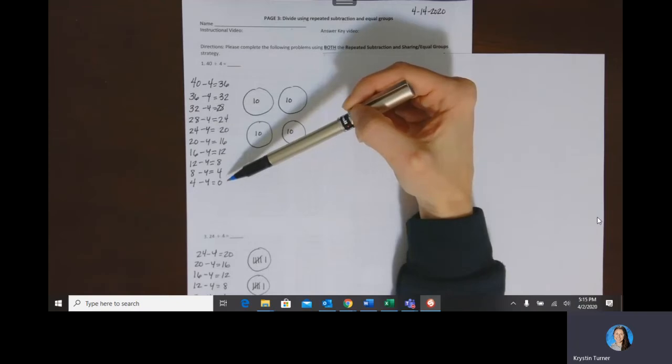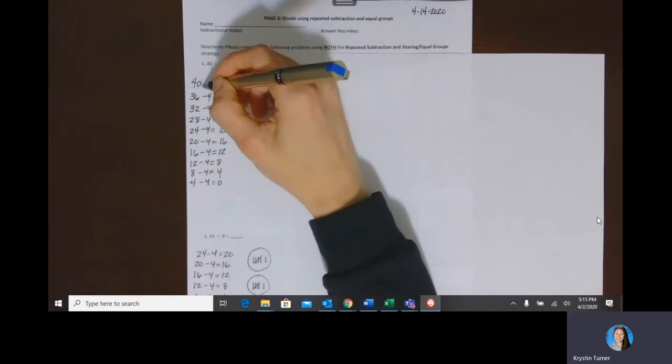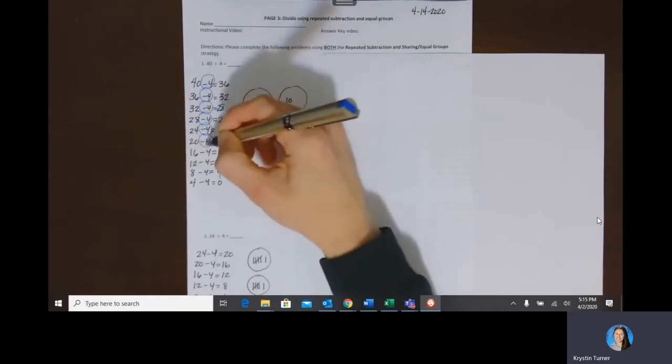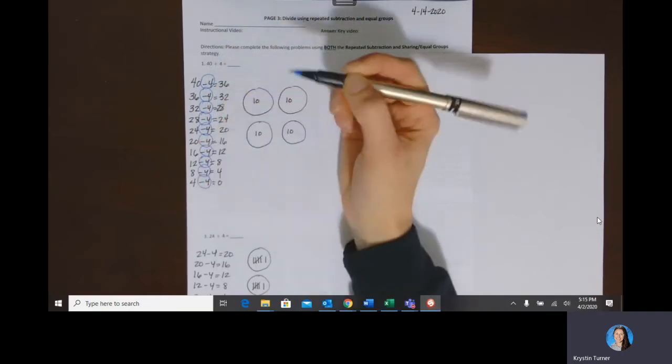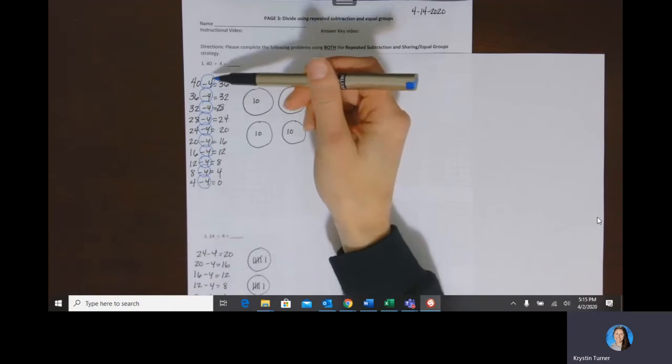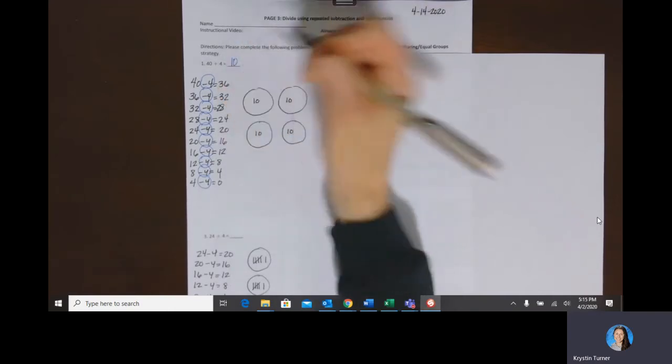And so that means that there's no remainder since we got to zero, and now we're counting the groups of four. So I count one, two, three, four, five, six, seven, eight, nine, ten groups of four. So if I take 40 and I take out 4, I would have 10 groups of 4, so that's 10 of them.